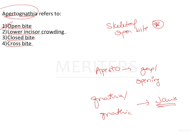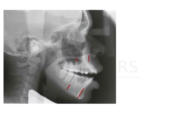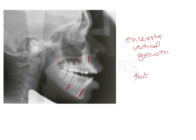Now, what are the differences between a skeletal open bite and a dental open bite, and how will you identify this? Skeletal open bites develop because there is excessive vertical growth taking place in the dentoalveolar complex, especially in the posterior area. When posterior growth is greater than anterior growth, there is going to be a downward rotation of the mandible with increased vertical height, resulting in an open bite.